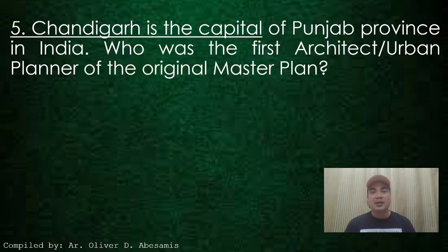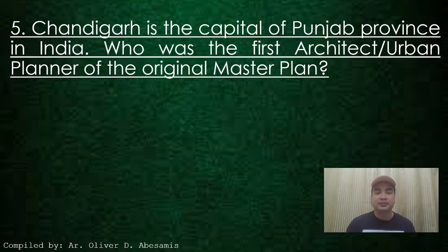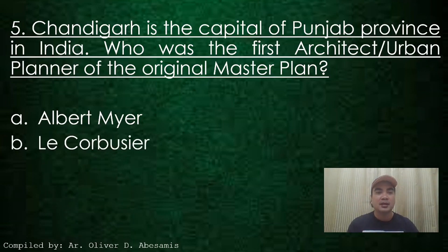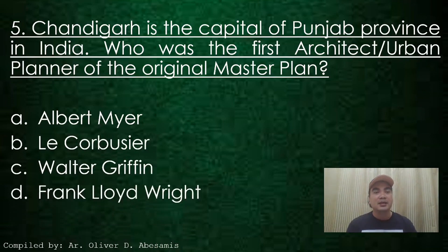Next. Chandigarh is the capital of Punjab province of India. Who was the first architect and urban planner of the original master plan? A. Albert Mayer, B. Le Corbusier, C. Walter Griffin, D. Frank Lloyd Wright. Answer: A. Albert Mayer.